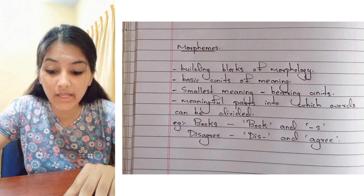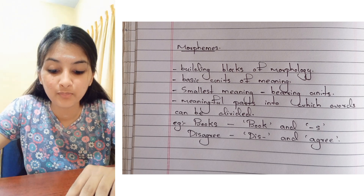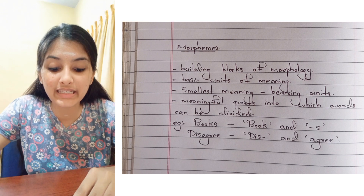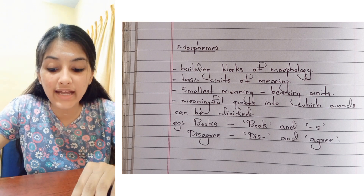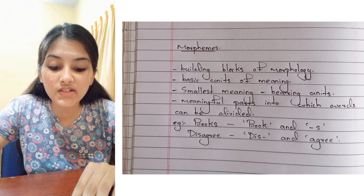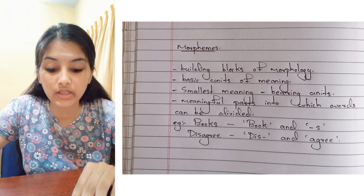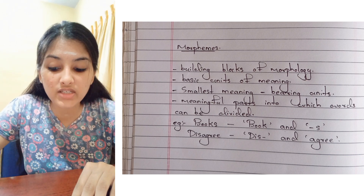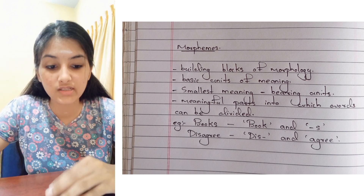So, what is meant by morphemes? Morphemes are the building blocks of morphology. Morphemes are considered to be the basic units of meaning in a particular language. That means it is the smallest meaning-bearing units of language. To be precise, the meaningful parts into which words can be divided are called morphemes.